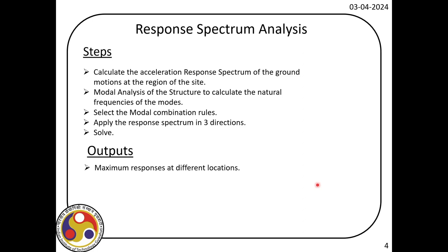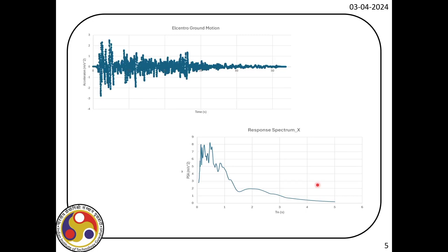With that background, let us go back to the ANSYS model and see how we can apply the response spectrum and then do the analysis. But first we need to develop the response spectrum. In this analysis we consider the El Centro Earthquake, and here you can see on your screen the time history record of El Centro Earthquake. We consider the major component of the earthquake and then using that we find out the response.